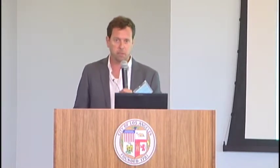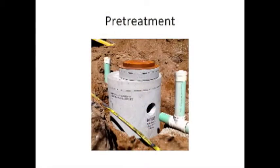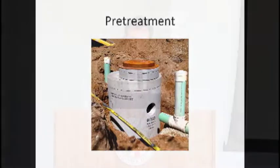There are a number of elements in a stormwater capture and use system, the first being pretreatment, which we just skipped past. A well-planned system doesn't really require much pretreatment, but it is important to keep the solids from accumulating in the tank. We want the tank to store water rather than silt.